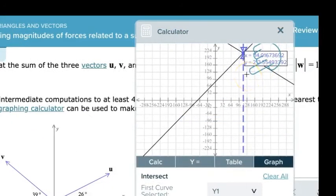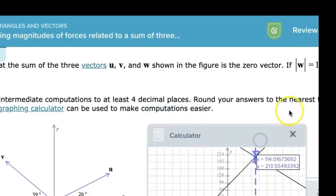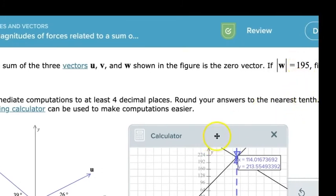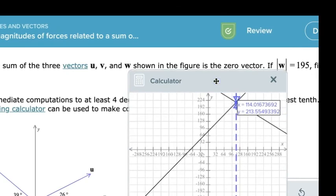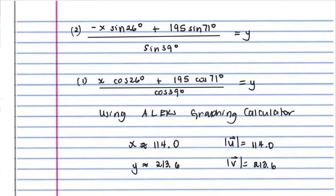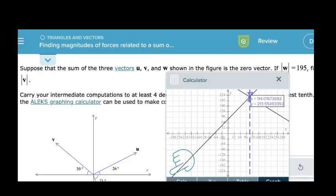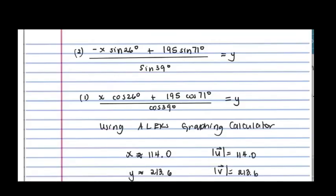There she blows! And they tell us to round our final answer to the nearest tenth. Hot diggity dog. So we're going to round our answer to the nearest tenth. So using the ALEX graphing calculator, we get x is equal to 114.0 and y is approximately equal to 213.6. And so we know that the magnitude of u is 114 and the magnitude of v is going to equal 213.6. Very good! Hot diggity dog!